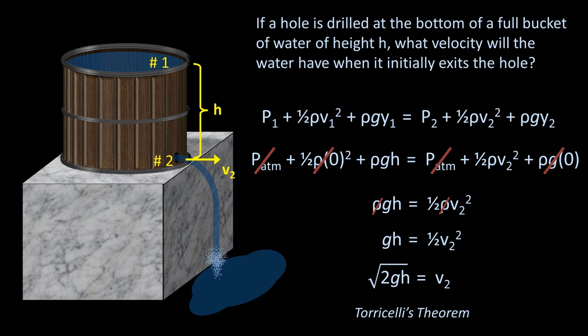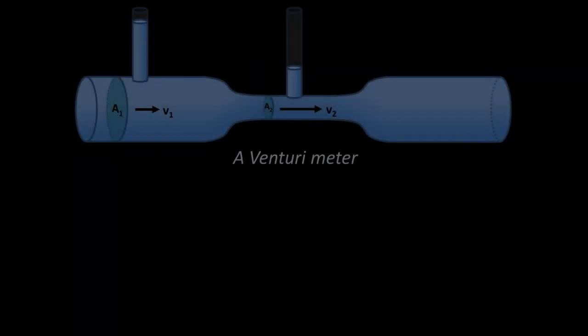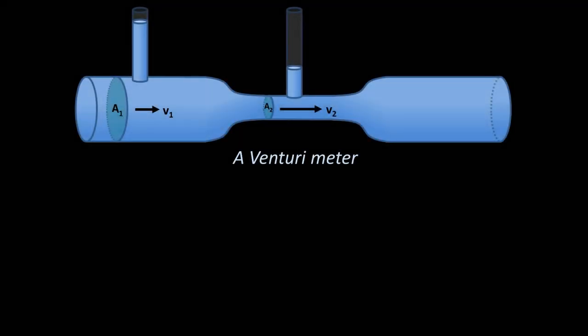Let's look at another application of the Bernoulli equation, one that's a bit more complicated. Here's a schematic of an interesting contraption called a Venturi meter. It consists of a horizontal tube of two different widths, where a vertical tube is attached to both the wide section and narrow section. A fluid moves along its length.